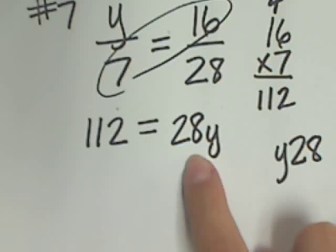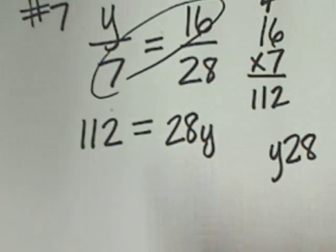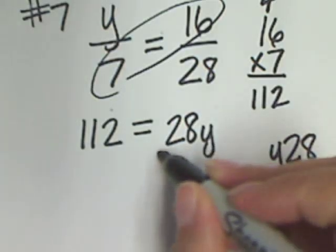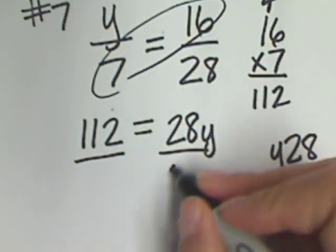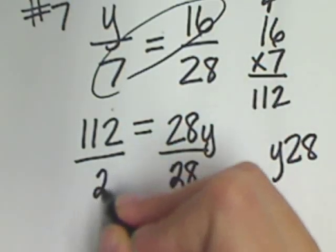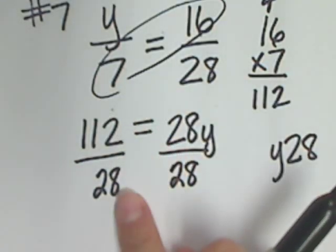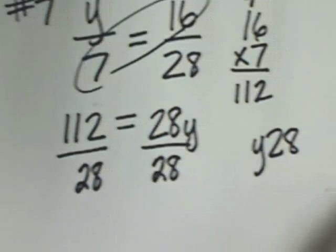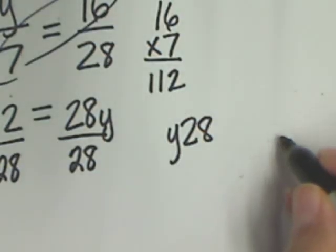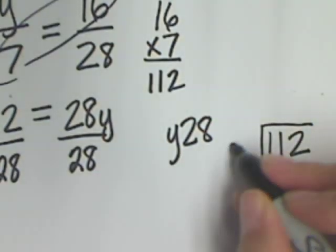If I see multiplication, I have to do the opposite. And what's the opposite? Division. So, divide by 28. It's 112 divided by 28. I'm going to pull to the side and work that out. But don't give me answers yet. Wait.